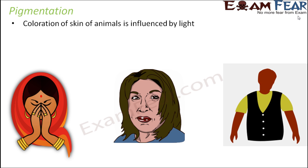Let's look at some examples: frogs and wall lizards often look lighter in color in bright sunlight, because sunlight has a direct impact on the pigments which impart color to their skin.